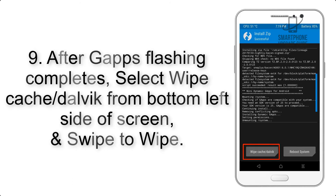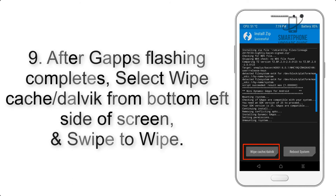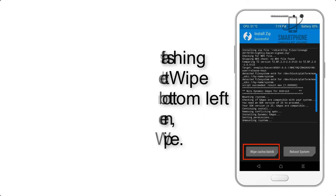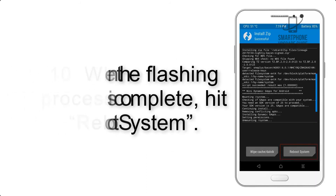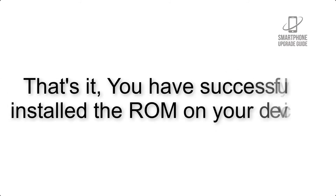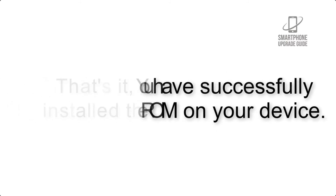select Wipe Cache and Dalvik from the bottom left side of the screen and swipe to wipe. Step 10: When the flashing process is complete, hit Reboot System. That's it — you have successfully installed the ROM on your device.